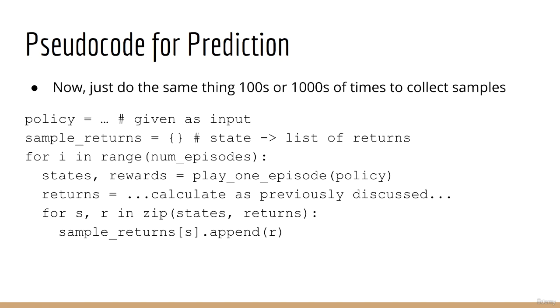Next, we loop through each state and return in corresponding order. For each return we encounter, we append that to the list of returns for that state. This loop is how we collect our samples.